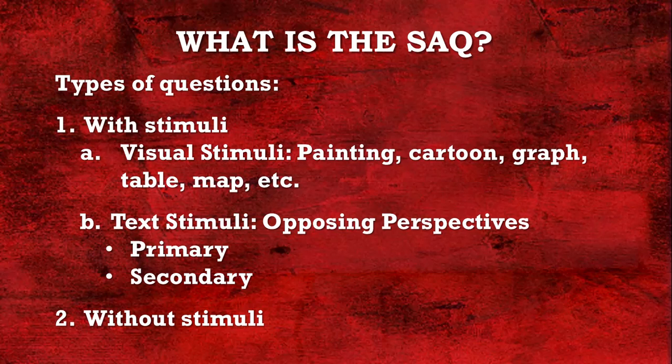The second type with stimuli uses text — you might get a primary source, somebody who actually witnessed something in US history, a first-hand account. And then secondary sources, which are going to be historians where you'll have opposing views on a particular moment in US history — it may be the Vietnam War, the Civil War, something of that nature.